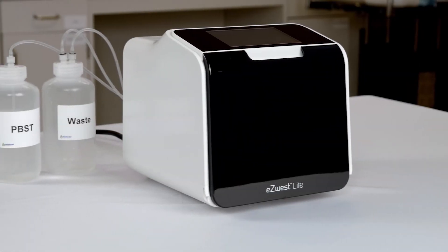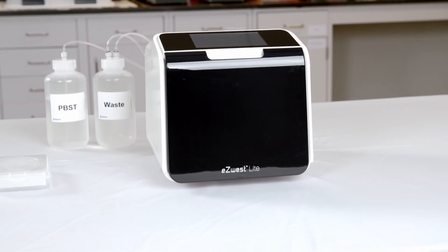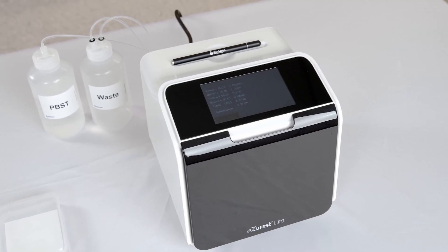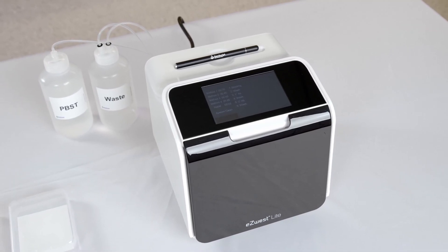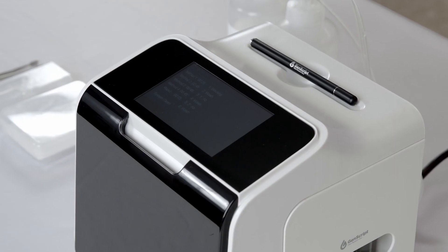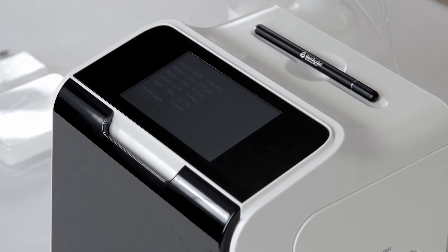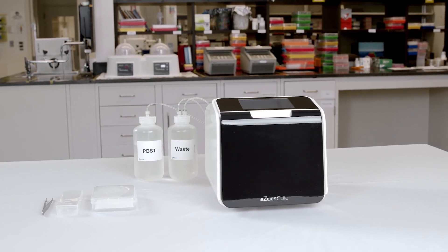Easy West Lite is a simple-to-use Western blotting device allowing researchers to free up hours of bench work. The device automatically completes the Western blotting steps, recovers antibodies, and delivers consistent results. Plan your Western days with Easy West and start saving time and money for a hassle-free solution.